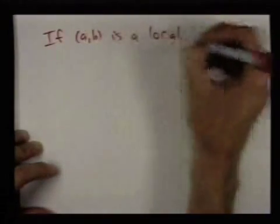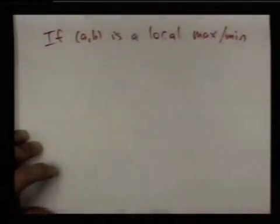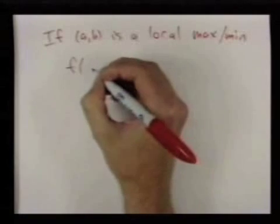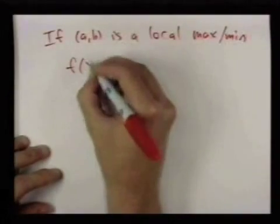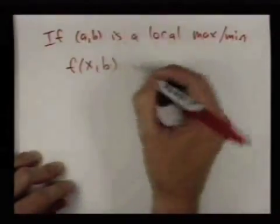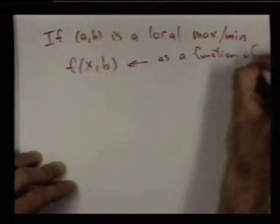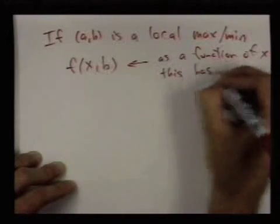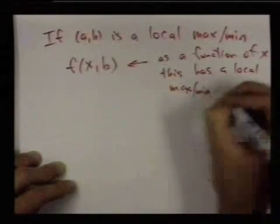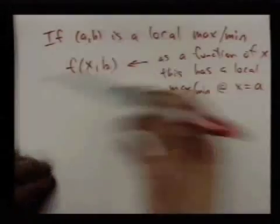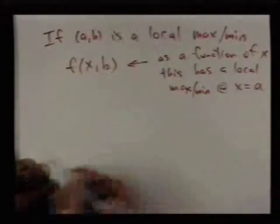Where calculus comes into play is that, let's say we have a local max or min. If (a,b) is a local max or min, this function f(x,b) as a function of one variable has to have a local max or min as a function of x at x equals a. If you remember for one variable, if a function is differentiable and it has a local max or min somewhere, its derivative there has to be 0 because it has a horizontal tangent.